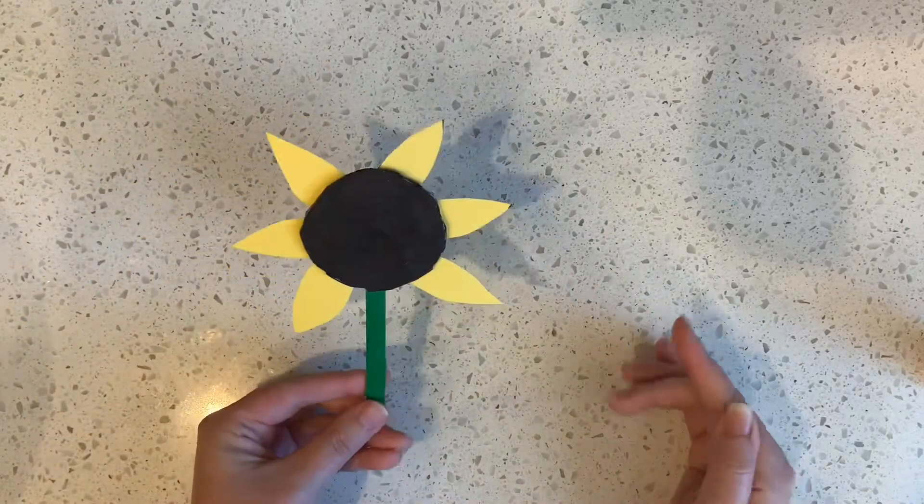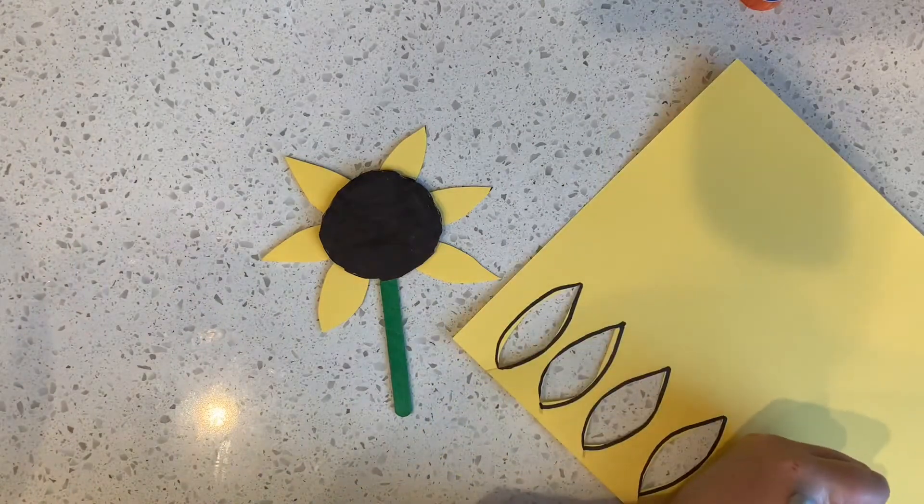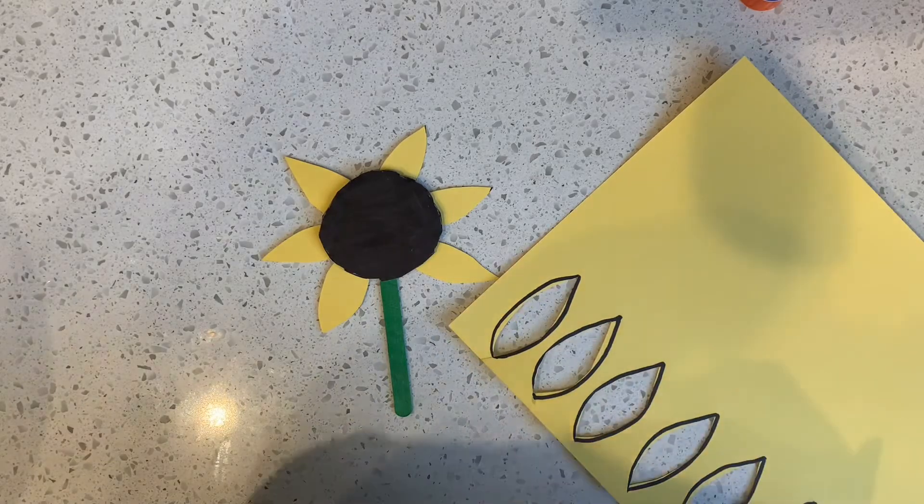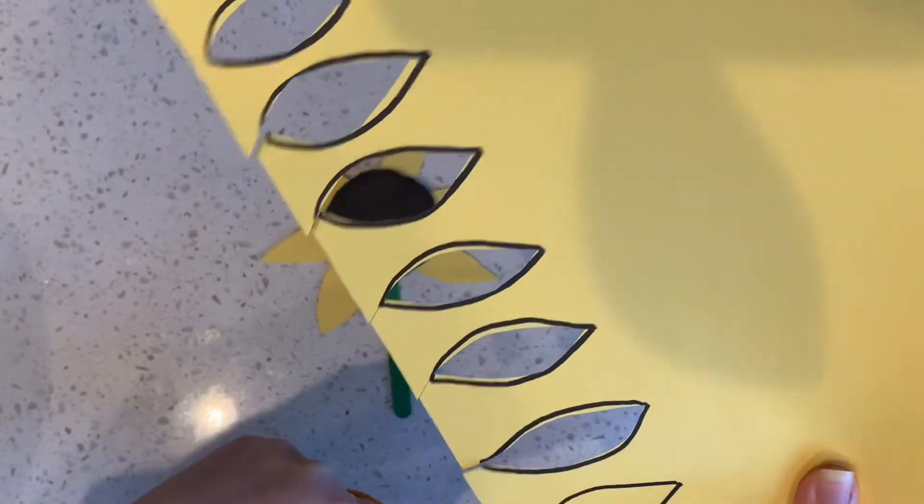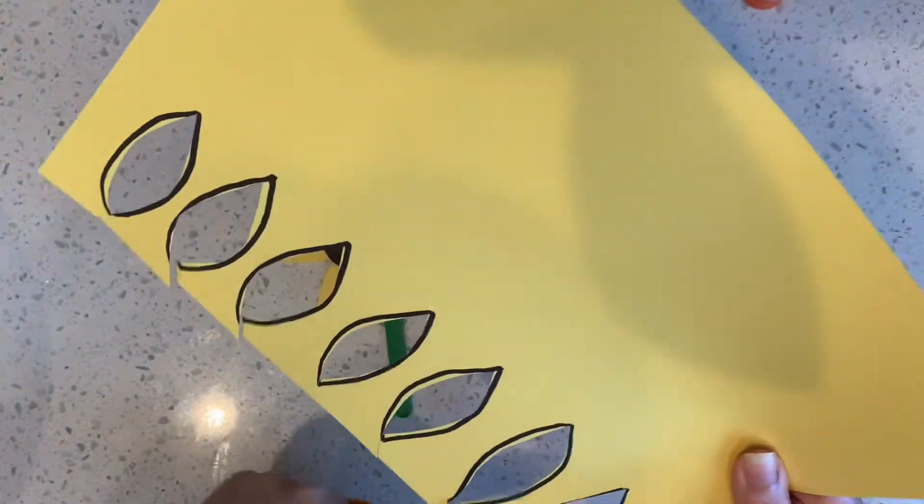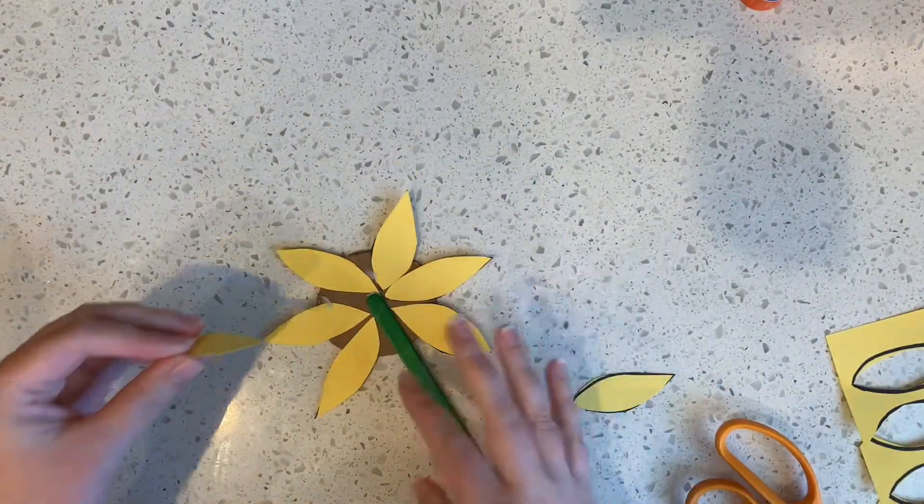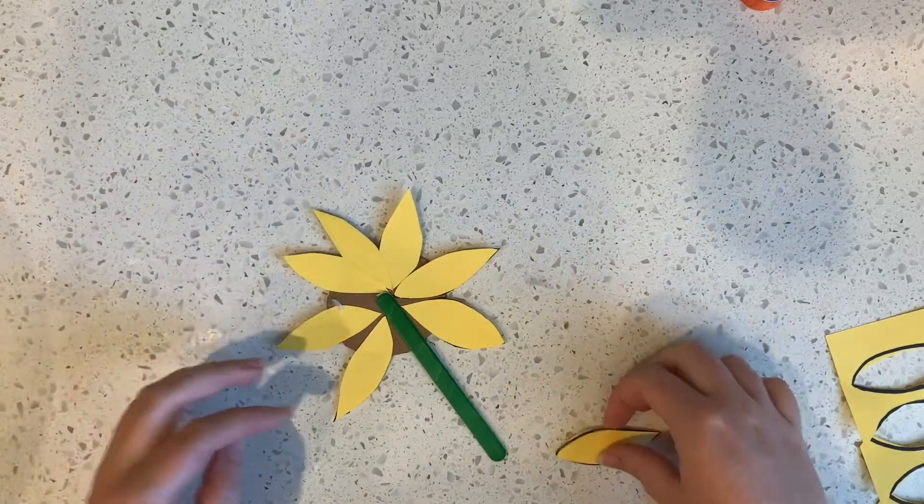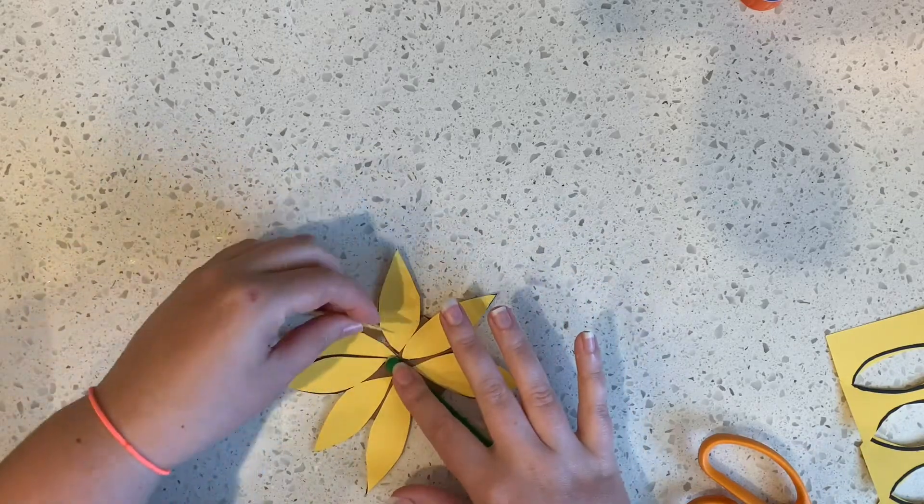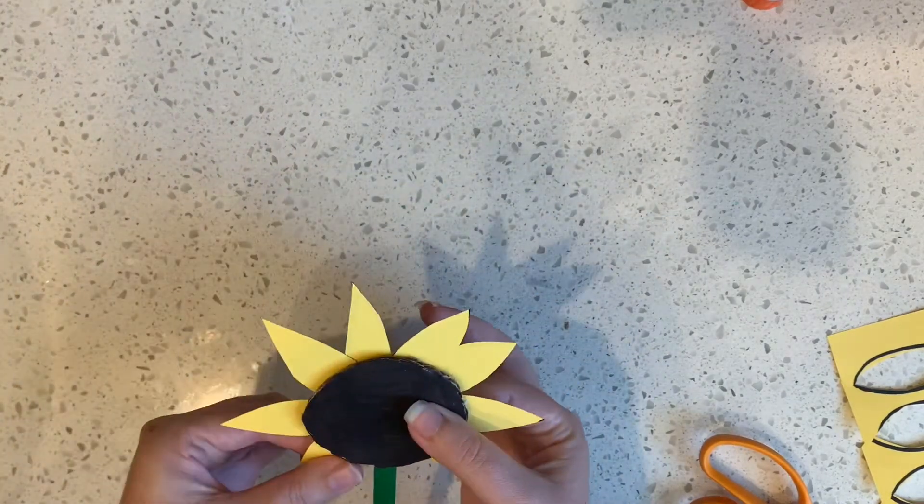There's my sunflower. Look at that. I think it might need a few more petals. I'm going to make two more and add those, just so that it's a fuller sunflower. Put one here. And I think I can fit one right here. There we go. There's a few more sunflower petals.